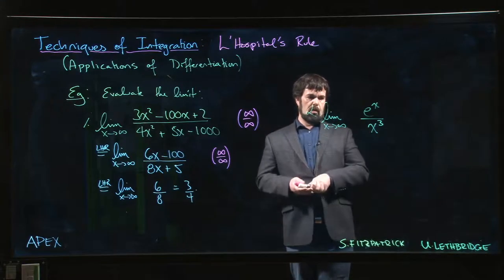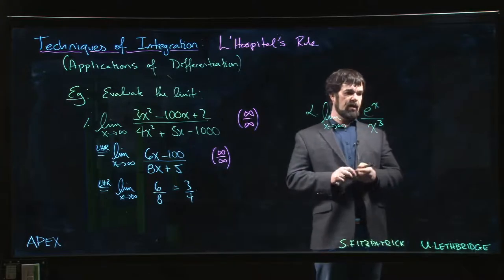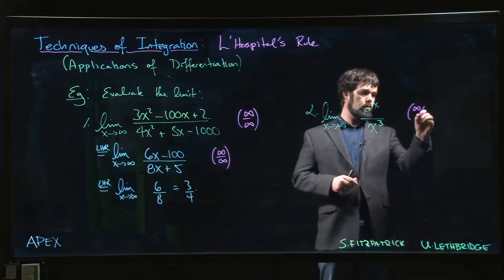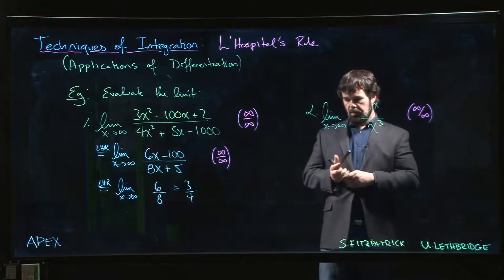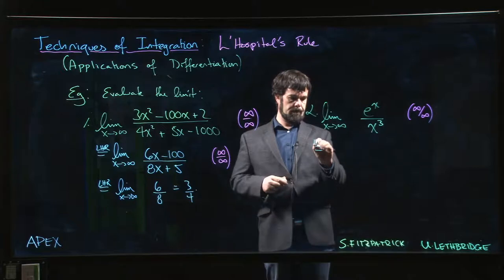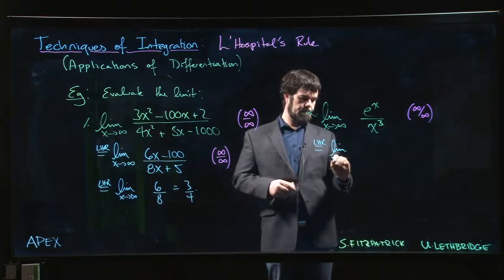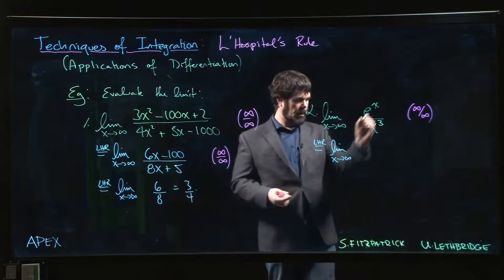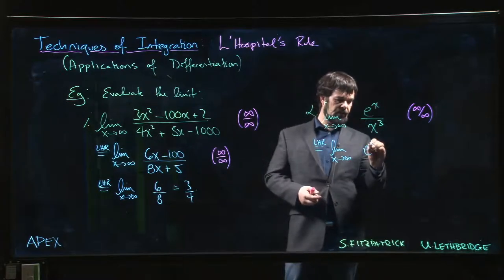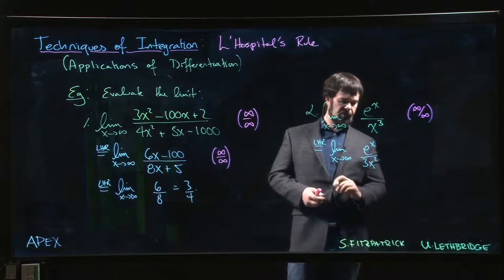So what we can do here is we can confirm that, yes indeed, this is infinity over infinity, so L'Hopital's rule applies. And of course, the derivative of e to the x is e to the x, but on the bottom we take the derivative of that power function, we get 3x squared.